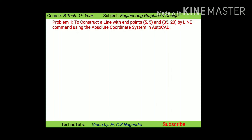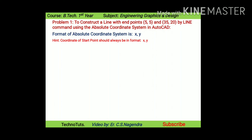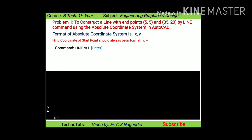Problem 1: construct a line with endpoints (5,5) and (35,20) by line command using the absolute coordinate system in AutoCAD. Before using any coordinate system to draw a line, you should know its format. The format of the absolute coordinate system is X comma Y. A hint: whenever you select coordinates for the start point, the start point coordinate should always be given in X comma Y format.